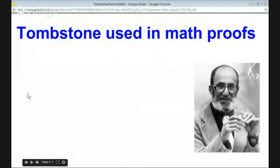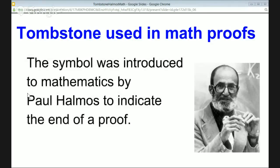Well, the tombstone was brought from newspapers and magazines to mathematics by this man here — Paul Halmos, a very famous mathematician of the 20th century. He started using that symbol, the tombstone symbol, to indicate the end of a proof, and it spread and it spread and it spread.